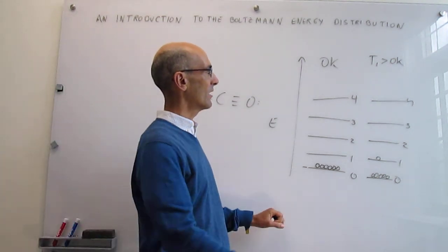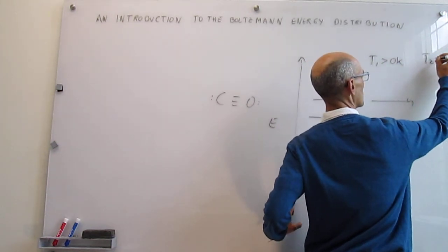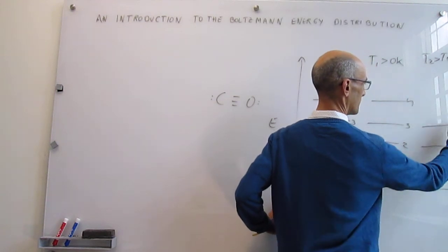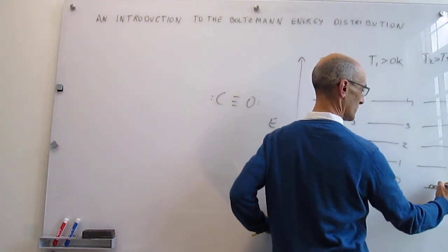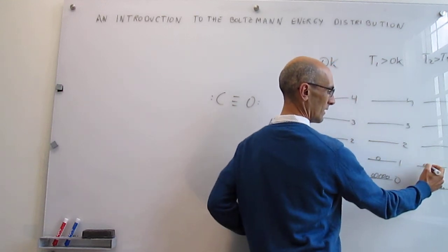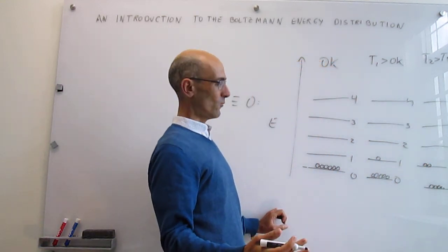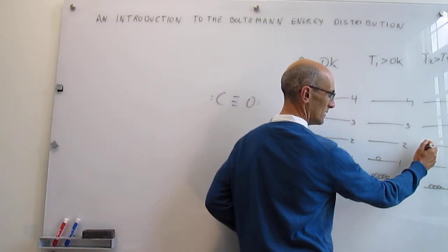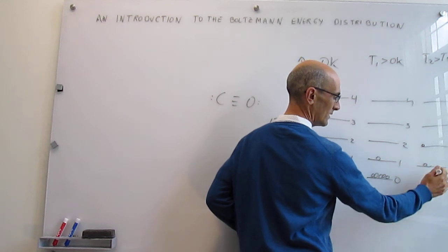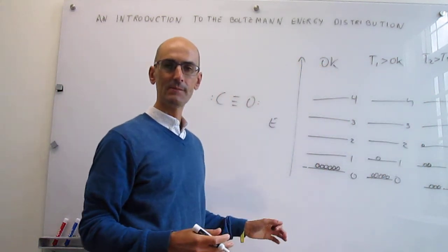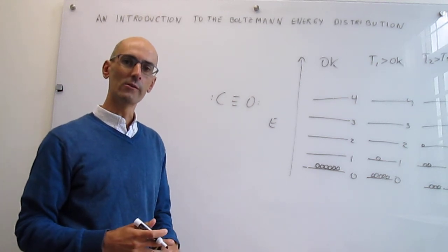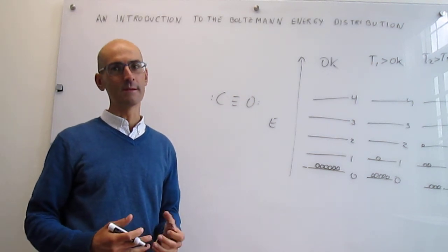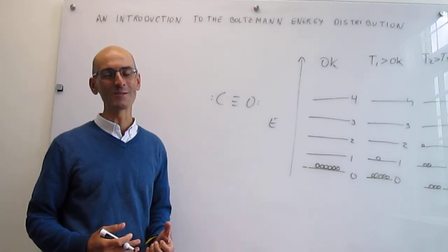Of course, you can think about having a larger temperature T2 greater than T1, where the distribution might look different — maybe four molecules in the ground state and two in the excited state, or four, one, and one, or three, two, and one, depending on what the temperature is. This is essentially how molecules can absorb energy. Here we're reviewing the case of vibrational energy, but something similar would happen for electronic, translational, and rotational degrees of freedom.